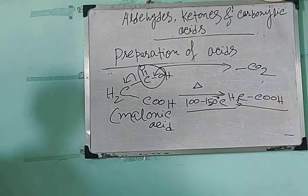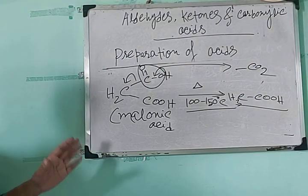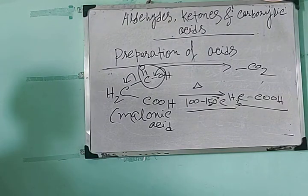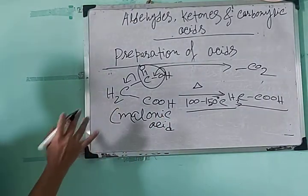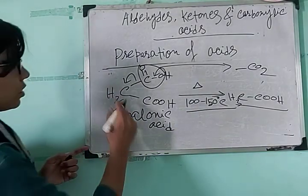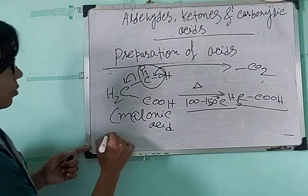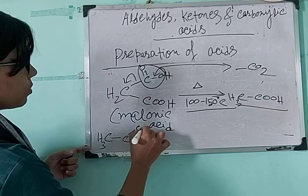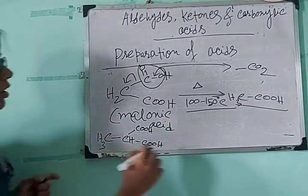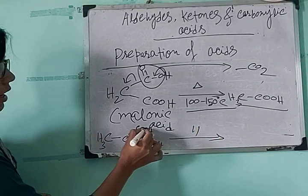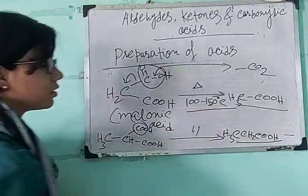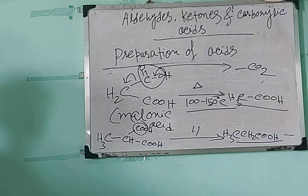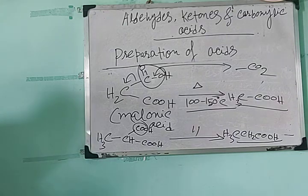What if we want to prepare any acid other than acetic acid? Heating malonic acid gives acetic acid, but if we try to prepare propanoic acid, we take an alkyl malonic acid — replacing one hydrogen at the central carbon atom with an alkyl group, say CH3. So the structure is CH3CH(COOH)2. On heating, CO2 is eliminated and we get CH3CH2COOH, which is propanoic acid. So both acetic acid and propanoic acid can be obtained from malonic acid and its alkyl derivatives.